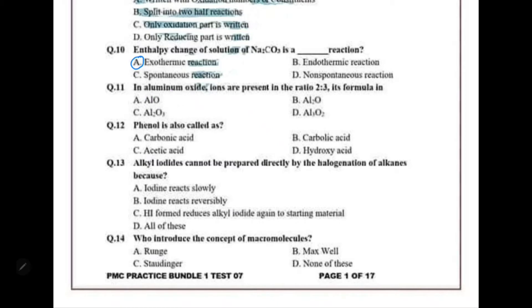In aluminium oxide, ions are present in a two-to-three ratio. There are two aluminium ions and three oxygen ions, so its formula is Al₂O₃.